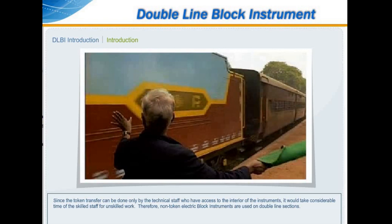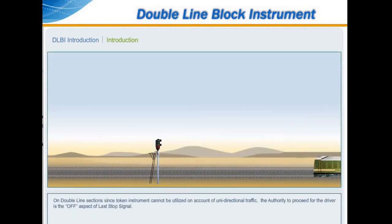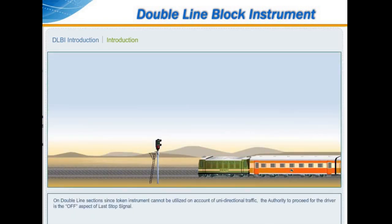It would take considerable time of skilled staff for unskilled work. Therefore, non-token electric block instruments are used on double-line sections. On double-line sections, since token instruments cannot be utilized on account of unidirectional traffic, non-token electric block instruments are the appropriate solution.